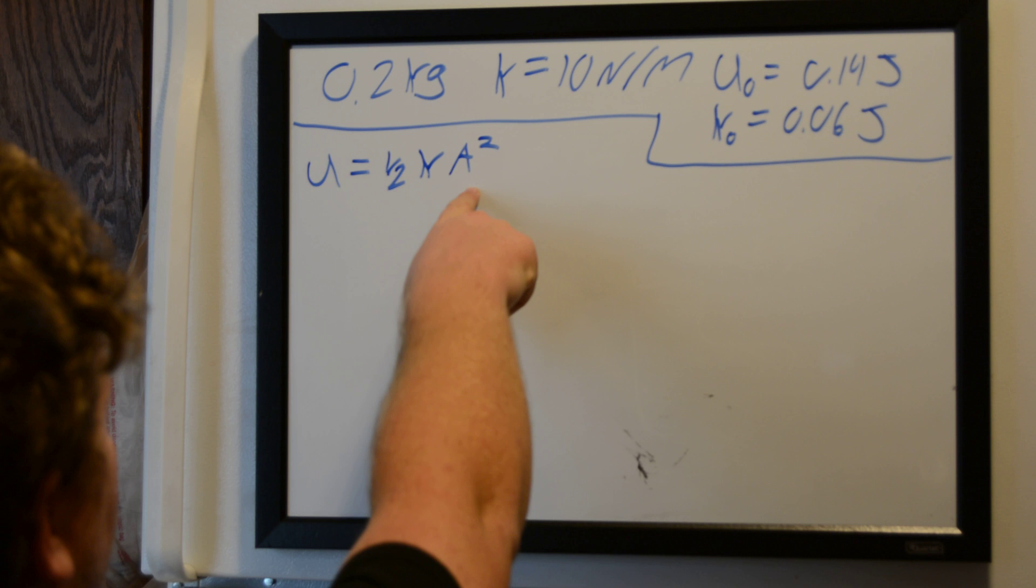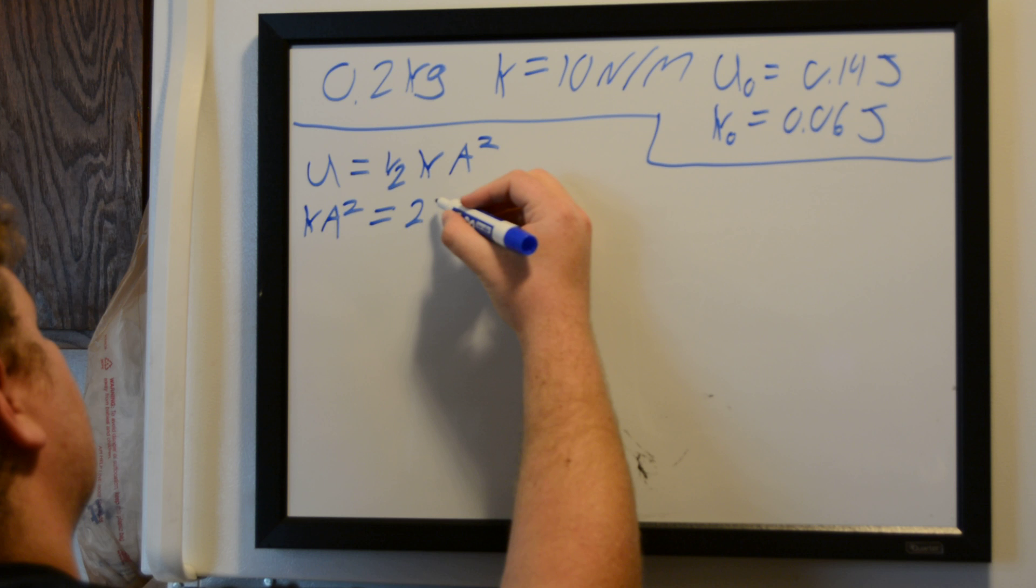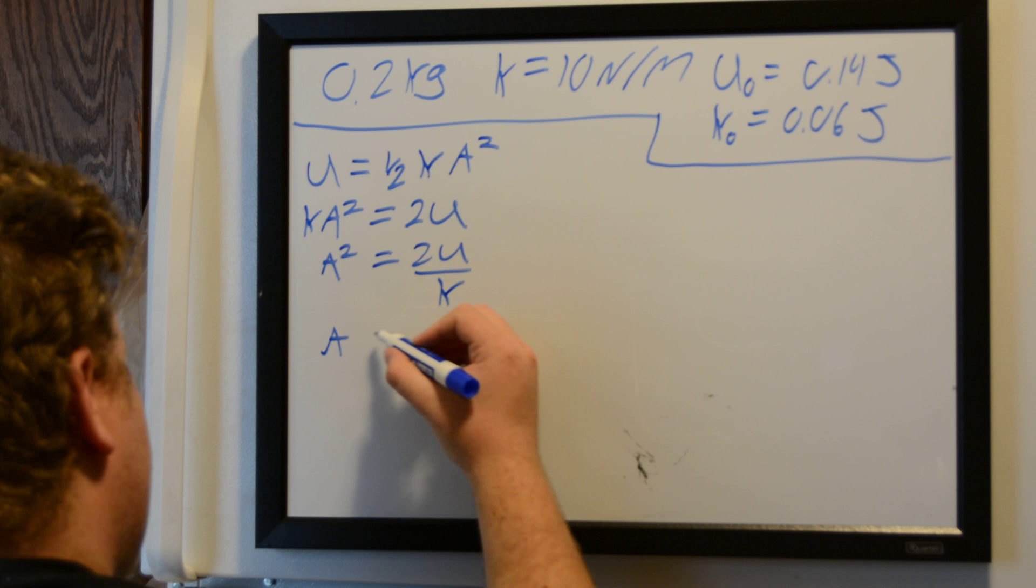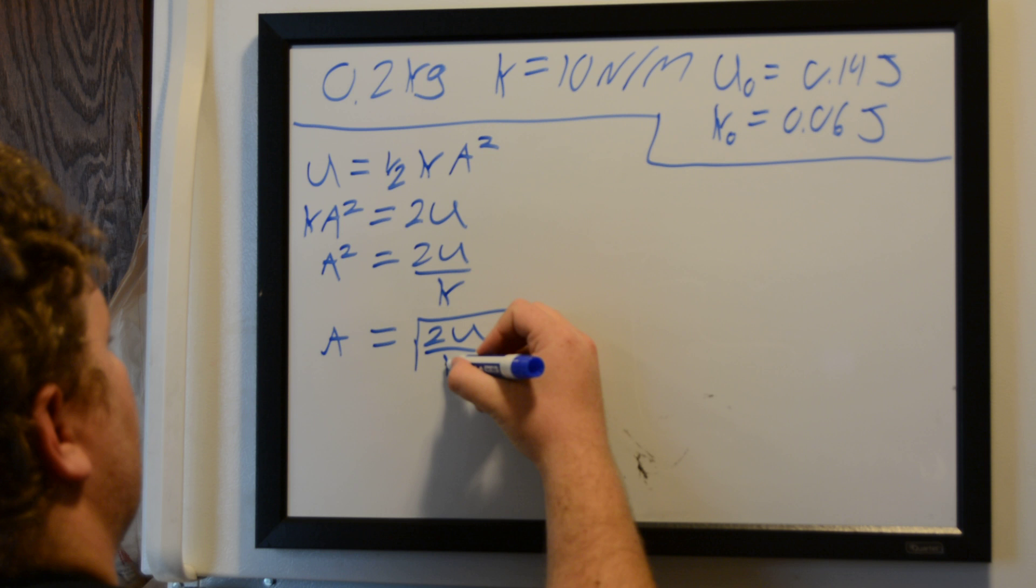And then just solve this equation for A. So we have A squared is equal to two times the potential energy over the spring constant. And then we have A, our amplitude is equal to the square root of twice our potential energy over our spring constant.